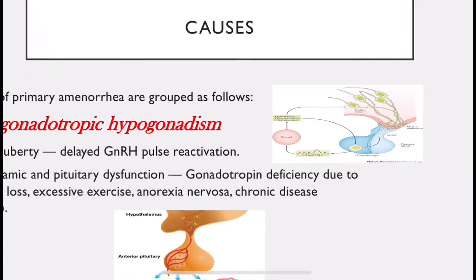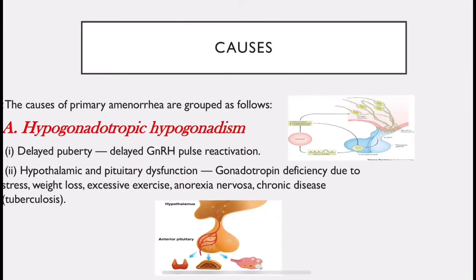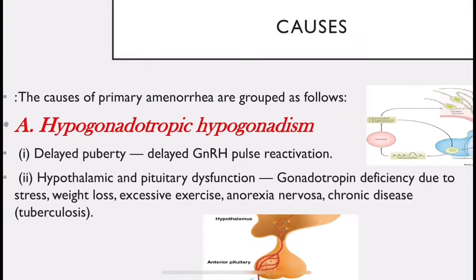Hypothalamic and pituitary dysfunction: if there is some dysfunction due to stress, weight loss, excessive exercise, anorexia nervosa (an eating disorder involving self-starvation and calorie obsession), or chronic diseases such as tuberculosis — these conditions cause hypothalamic and pituitary dysfunction resulting in decreased GnRH and consequently decreased gonadotrophin release.